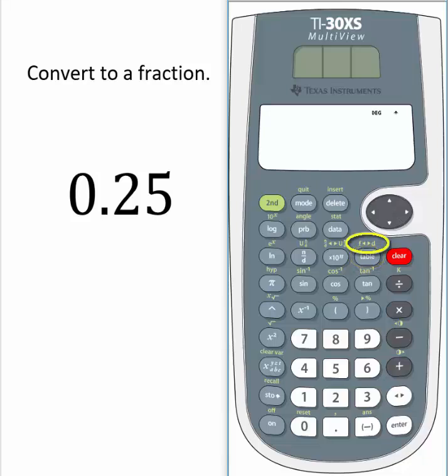Written above the table button are the symbols F with double arrows and then D. The F stands for fraction, the D stands for decimal, and the arrows between them mean that they will convert whatever number you enter into the other form. So this function switches fractions to decimals, but it also converts decimals to fractions. This is why the arrows point in both directions.